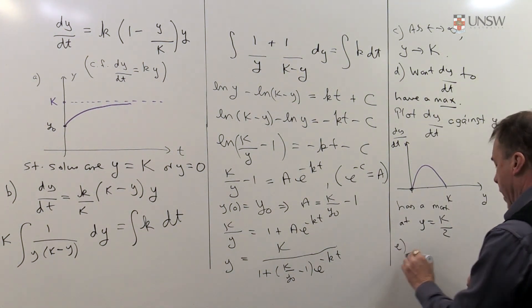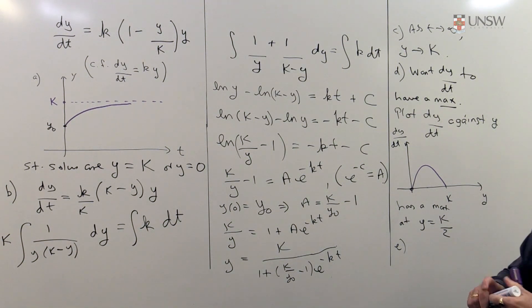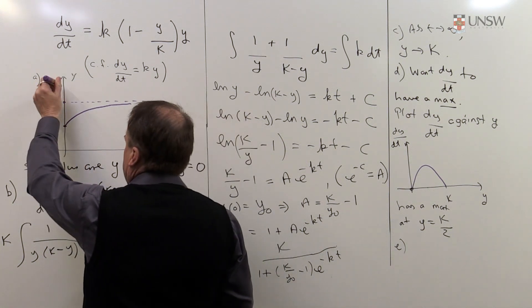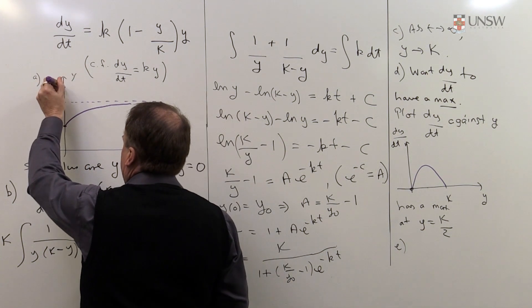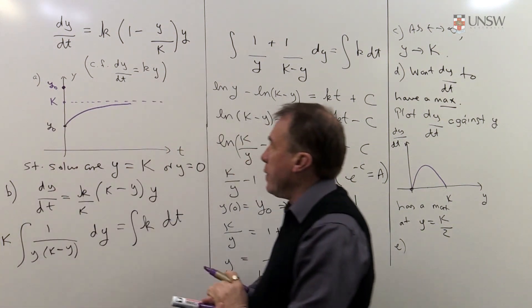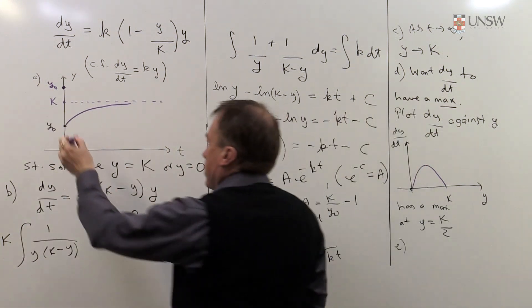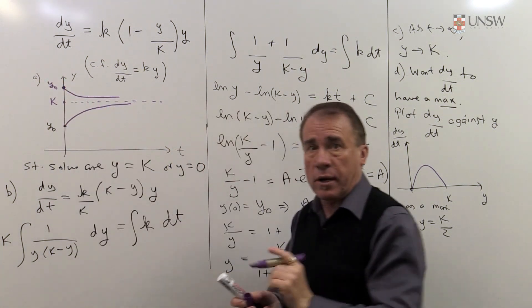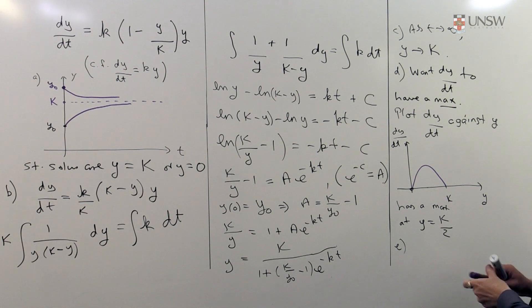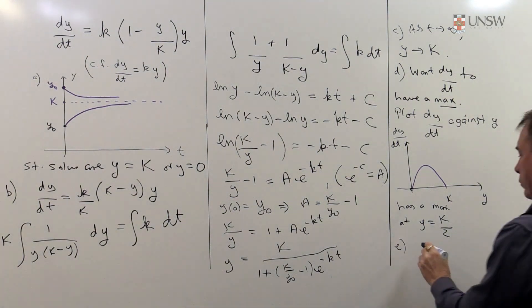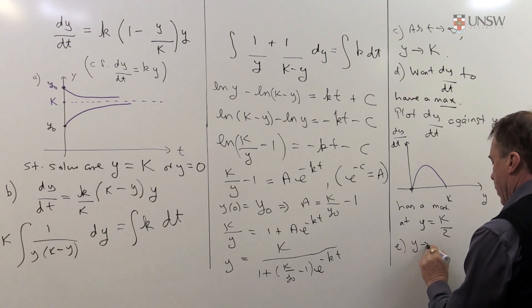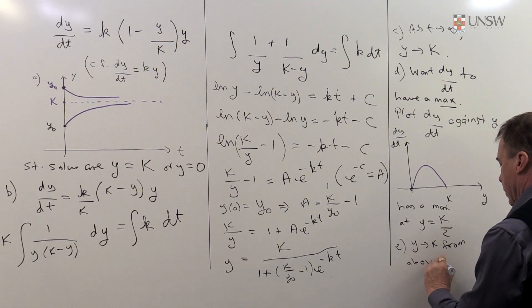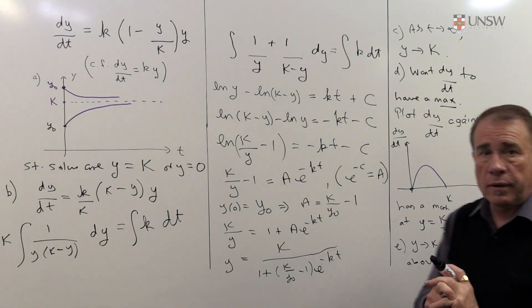Final bit simply says what happens if you start out with your y_0 bigger than k, so if your population is bigger than k, so if your y_0 happened to be up there, well in that case the curve is simply going to come down and again it's still going to approach k, so it's going to come in from this side. So for this last bit we would simply say y goes to k but from above. And that's the solution.